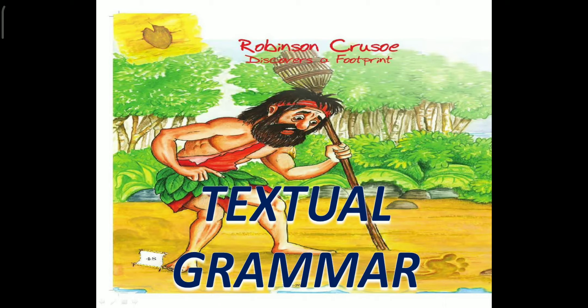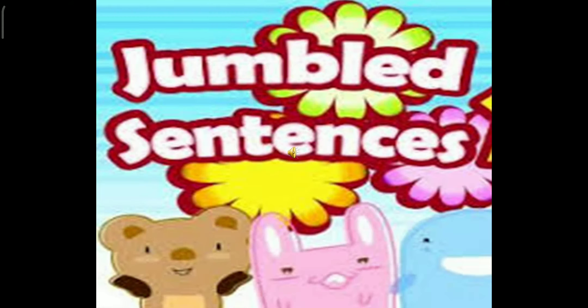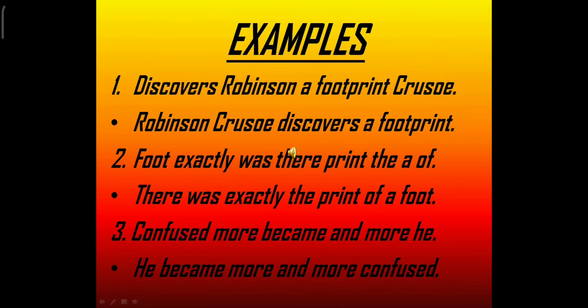Welcome back to the discussion on the chapter 'Robinson Crusoe Discovers a Footprint.' Now that we have had an elaborate discussion on the text, let us concentrate on the textual grammar. Our first topic of discussion in today's video is jumbled sentences. You already know what jumbled sentences are — you have already worked on jumbled words, and jumbled sentences are very similar.